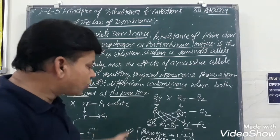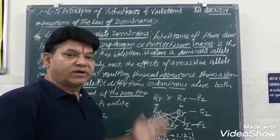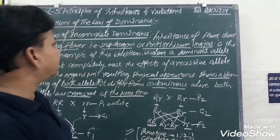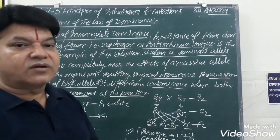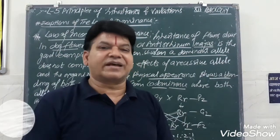But here, both the phenotype and genotype ratio were 1 ratio 2 ratio 1. So this is all about the law of incomplete dominance. This is the first exception. Thank you and have a nice day.